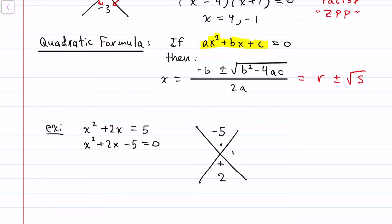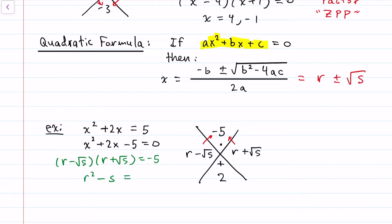It actually does factor, just not with integers — with radical numbers. If one root is r + √s and the other is r - √s, let's check: multiplying them gives (r - √s)(r + √s) = r² - s, which must equal negative five. And adding them gives (r - √s) + (r + √s) = 2r, and the radicals cancel. So 2r equals 2 (the middle coefficient), meaning r = 1. Then plugging back in: 1 - s = -5, so s = 6.